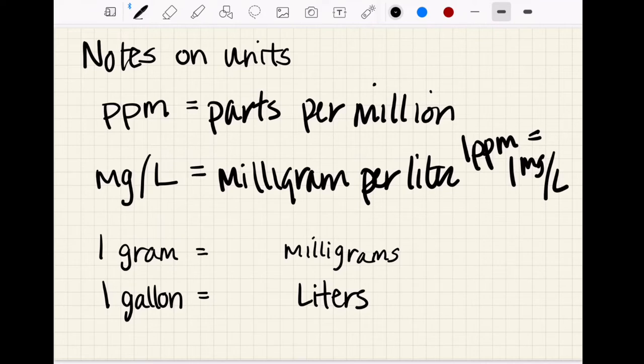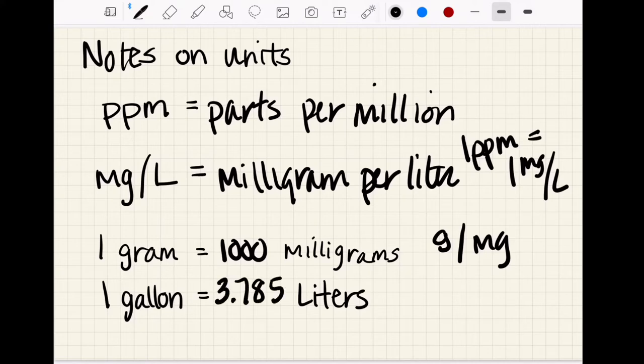A couple other things we're going to need to know: one gram is equal to a thousand milligrams, and one gallon is equivalent to 3.785 liters. We'll use that in our equation as well, so just a couple points on units that we're going to need to know.